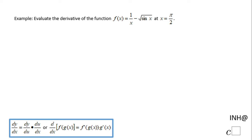Welcome, or welcome back. I need help at C squared. In this example, we need to evaluate the derivative of this function: 1 over x minus square root of sine of x at x equals pi over 2.